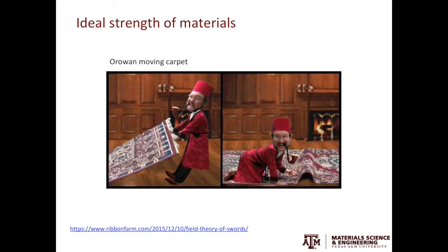This cartoon is a really nice analogy showing Orowan pulling on a carpet. Orowan is a scientist who had substantial contributions to dislocation theory. Consider two scenarios: in the first, you pull the entire carpet — this is not easy, and is similar to gliding one atomic plane on another. In the second scenario, you create a kink in the carpet and push the kink. The force required to push the kink is much less than pulling the entire carpet. This is analogous to the energy of gliding a dislocation.